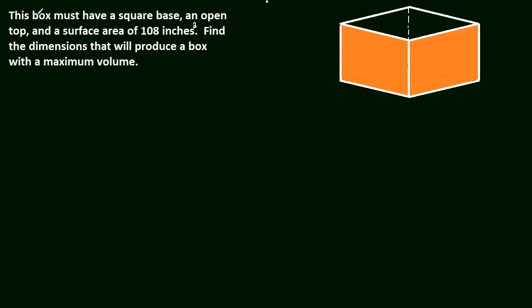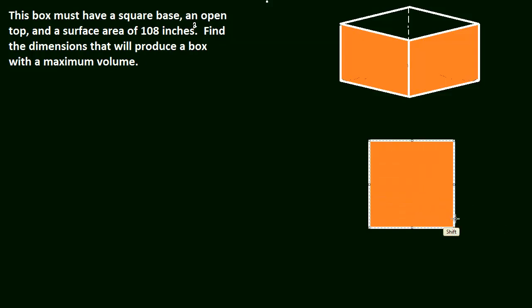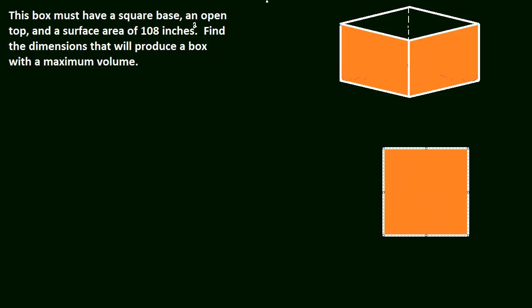So we're going to have some restrictions. In this case one of the restrictions is that this box must have a square base. So if you're looking at the box from the top down, this is the base and it has to be square. So all these sides have to have the same length. Let's just go ahead and begin by labeling them as x. And of course that means that up here that's how it translates to the picture of the box.